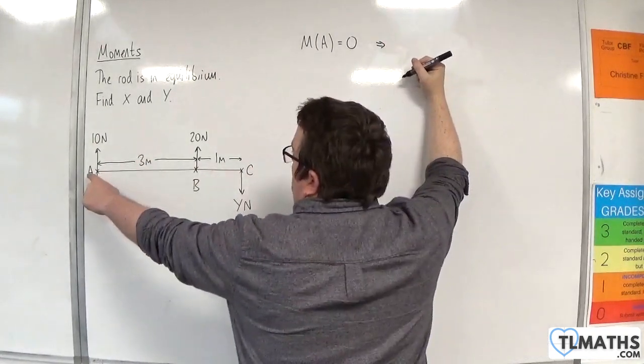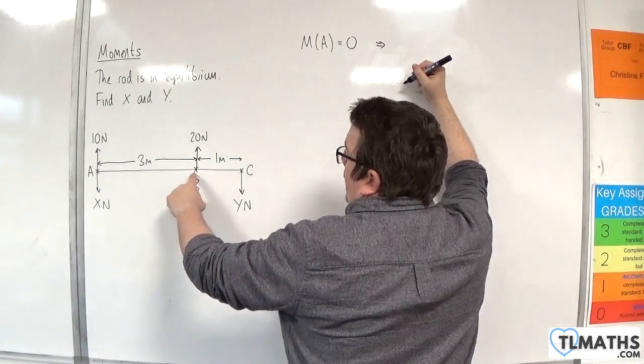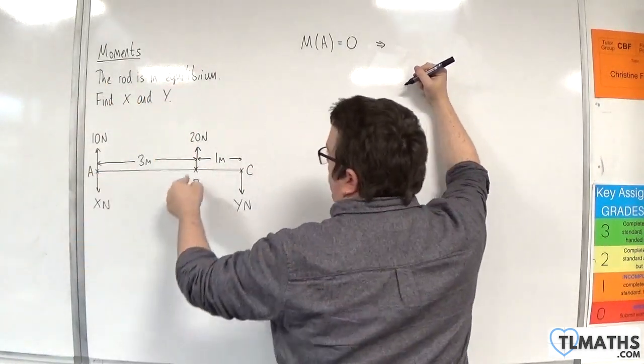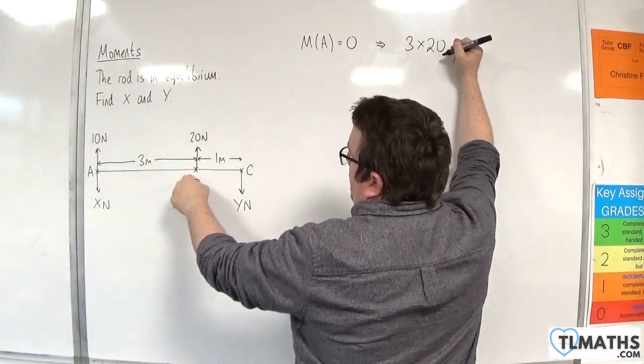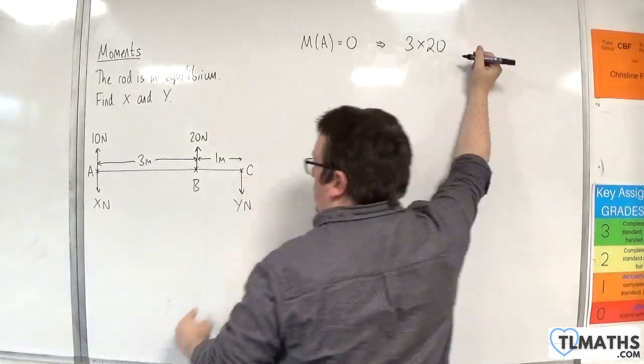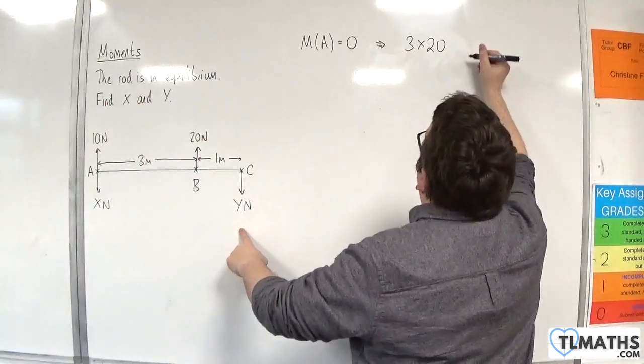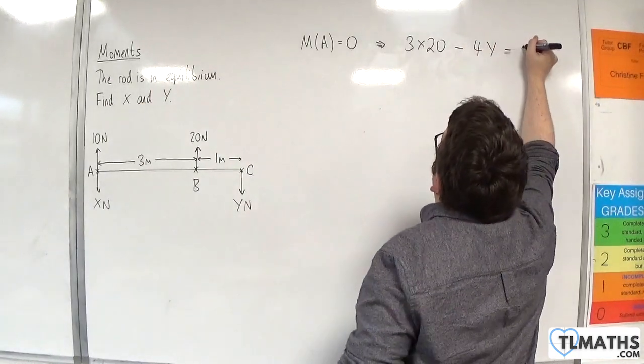From A, we are 3 meters away from the force at B, which is going around in an anti-clockwise motion, so that'll be positive: 3 times 20. We are 4 meters away from the Y Newton force, which is going clockwise, so we take away 4Y. This equals 0.